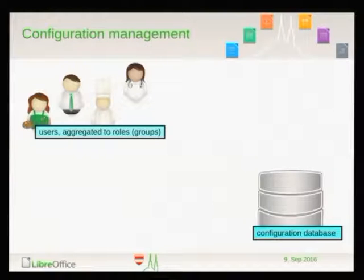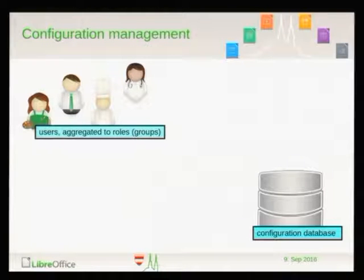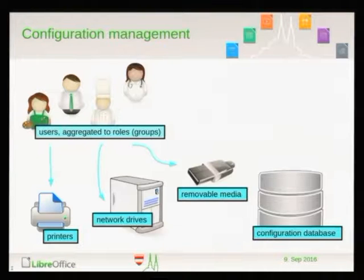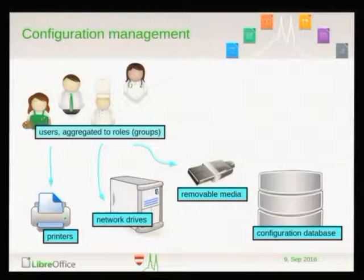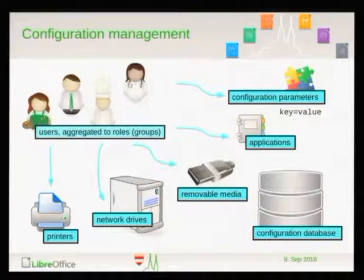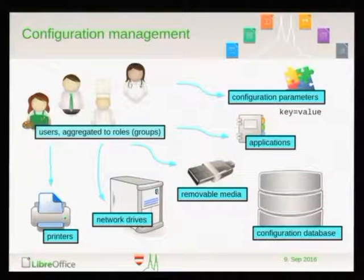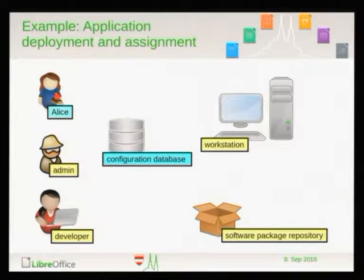Another key advantage of our migration has been centralized configuration management. The idea is you have your users in your IT landscape, and they typically cover certain roles. You don't configure each user separately — you aggregate them to roles, and to those roles you can attach certain rights or features: the ability to access certain printers, authorization to access certain network drives, or authority to plug in removable media. A particularity of our configuration management is that applications together with a specific configuration may be assigned to roles on a per-role basis, all stored in a central configuration database.